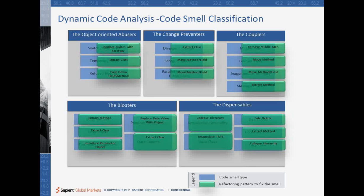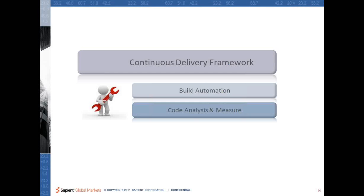We have talked about the quality coding framework and discussed the first element of that, which is code quality — which actually enables you to have different tools or equipment to solve it. However, it doesn't tell you how to use those things, and this is where we actually start using it.